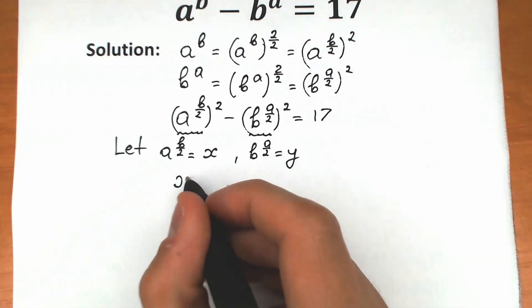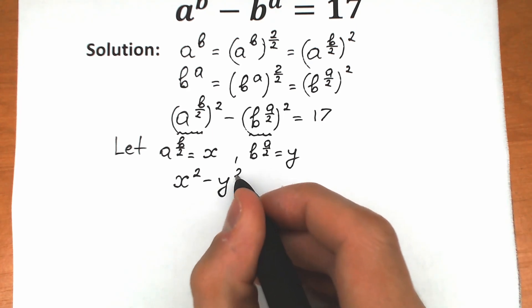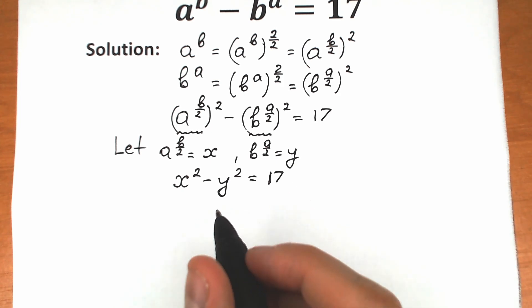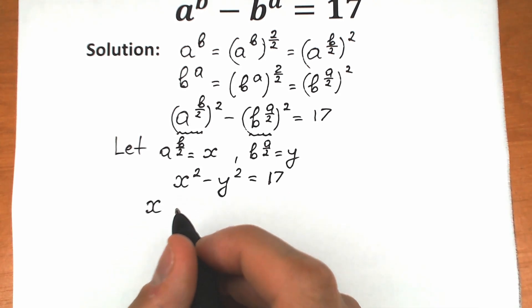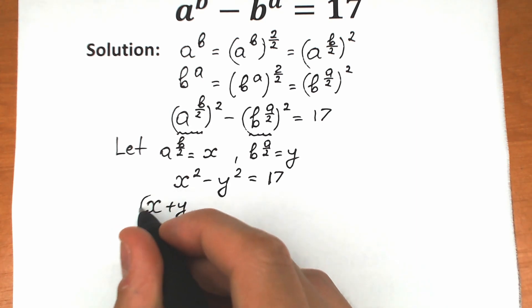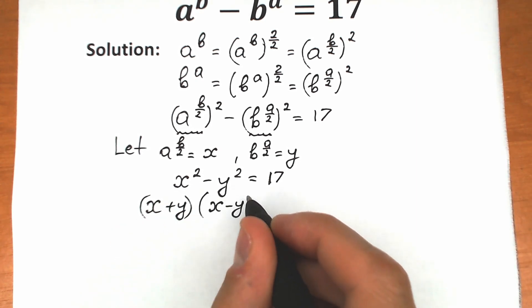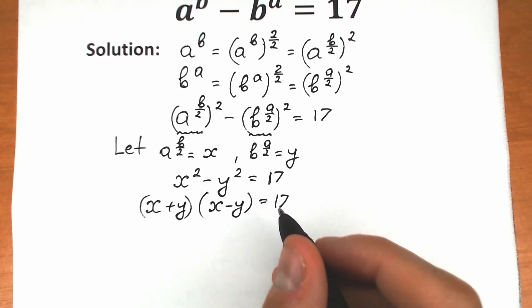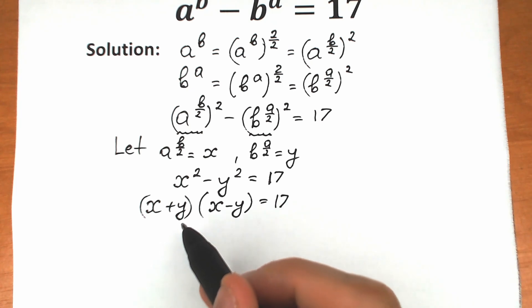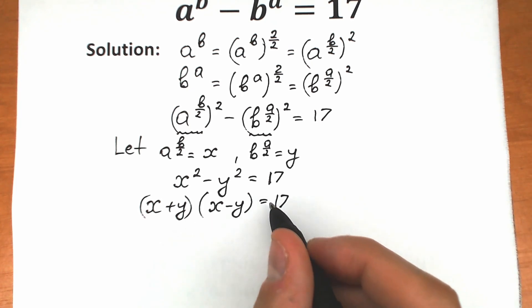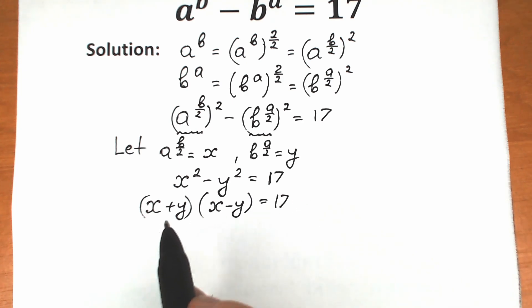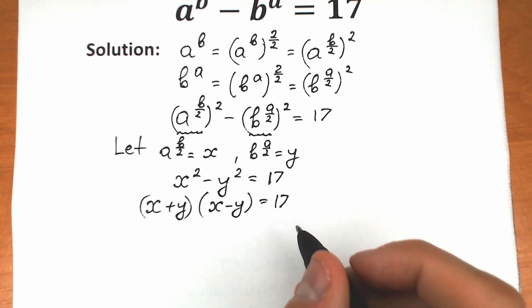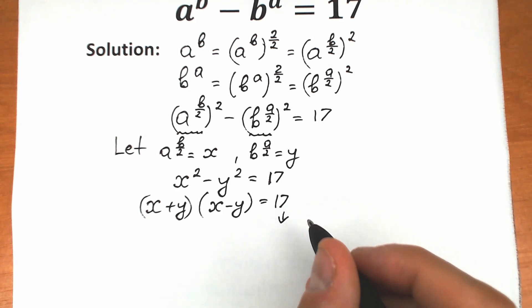With this substitution we have x squared minus y squared equal to 17. Using the difference of squares formula, we can write this as x plus y times x minus y equal to 17. We now have a product on the left and a number on the right.